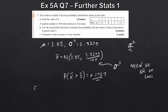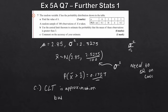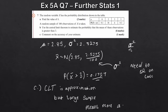For part (c), it asks you to comment on the accuracy of the estimate. Remember the Central Limit Theorem only gives an approximation, but because we have a large sample of 100, the estimate is going to be quite accurate. A large sample means a more accurate approximation.